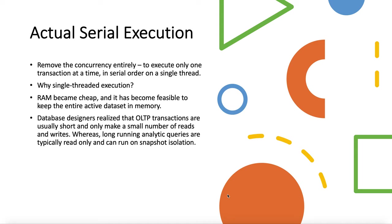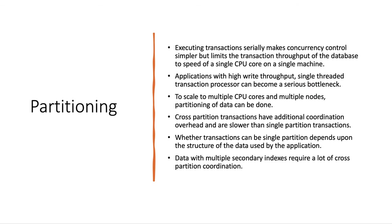But with serial execution, the throughput is limited to that of a single CPU core because we are utilizing only a single thread with no concurrency at all. If we execute transactions serially, it makes concurrency control a lot simpler, but the limitation is that transaction throughput depends upon the speed of a single CPU core on a single machine.